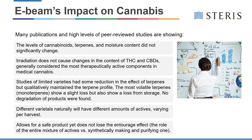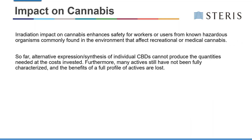There are different varietals of naturally grown cannabis that can have different amounts of actives, and they can also vary per process or per harvest of a lot, so variation is expected. We're trying to reduce the risk — we're not trying to make everything have the exact same level of activity. Radiation allows for a safe product yet does not lose what is referred to as the 'entourage effect,' which is the role of all the actives in cannabis, many of which we still do not know the full use of today.